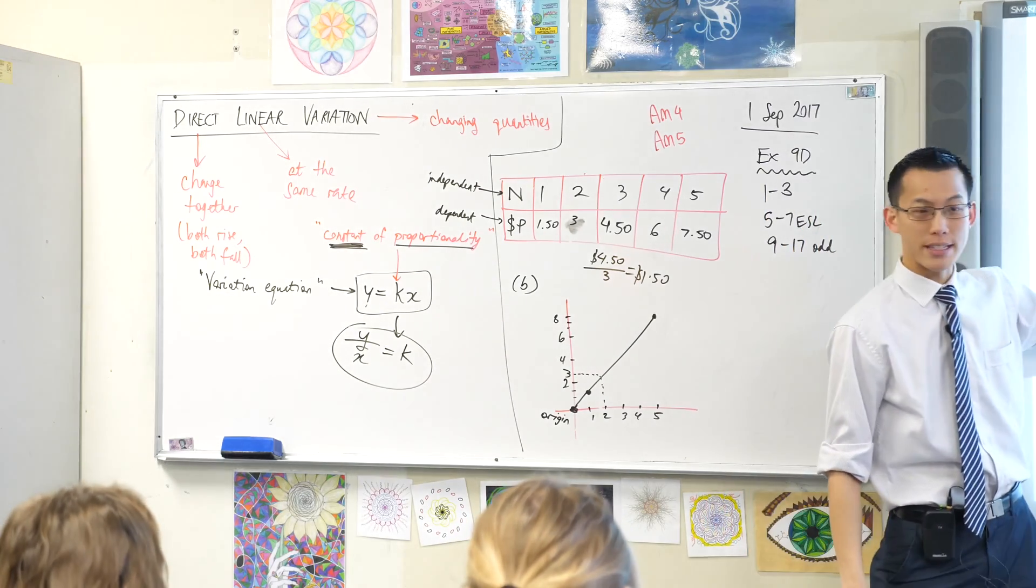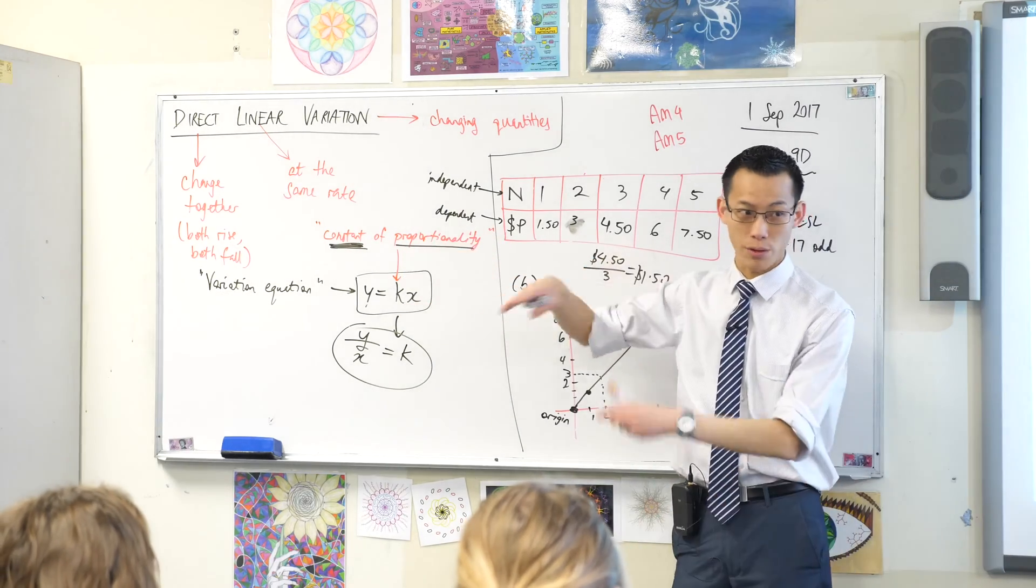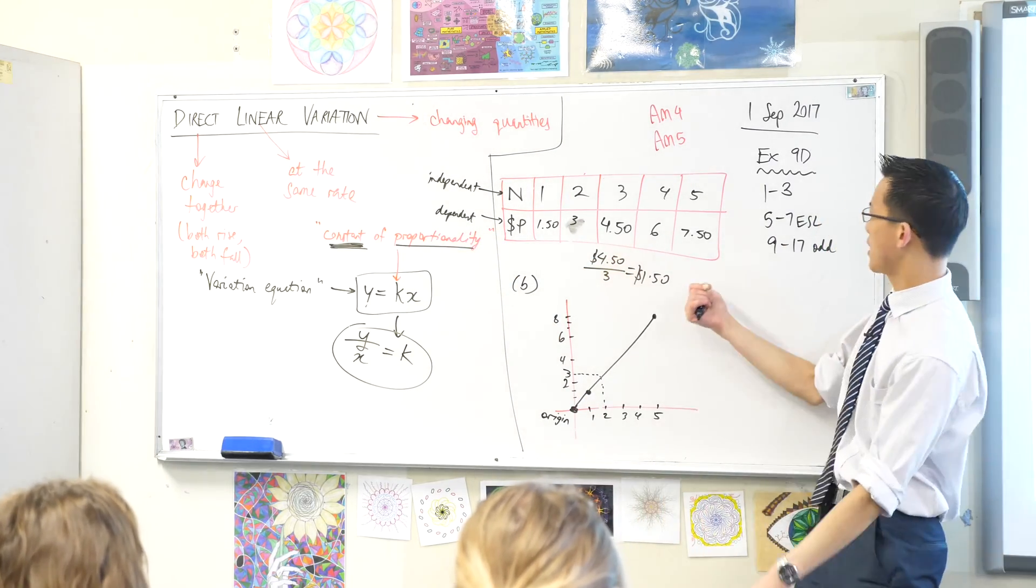Part C. We've actually already done this. The constant of variation is the same as the constant of proportionality. We've got it. It's $1.50.